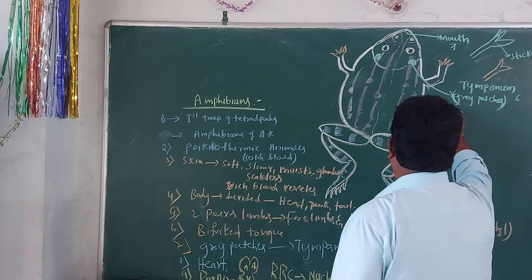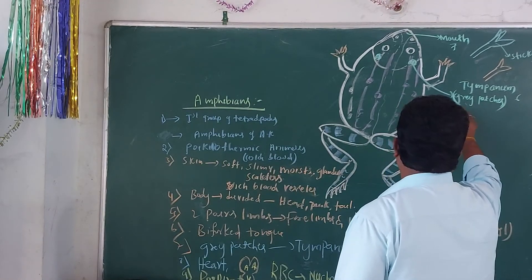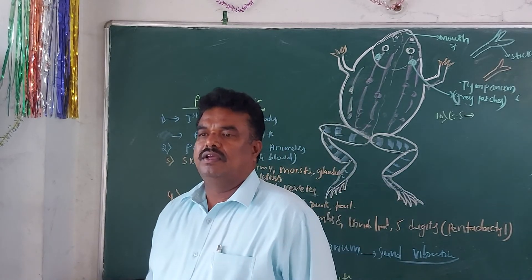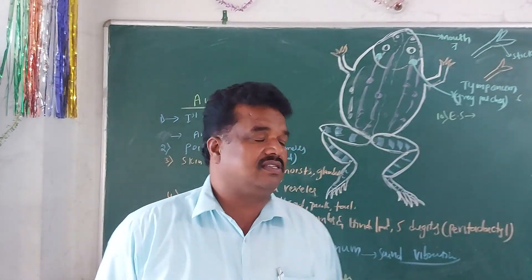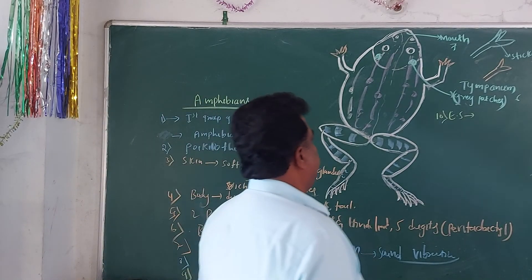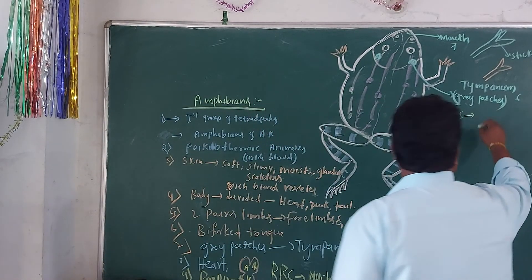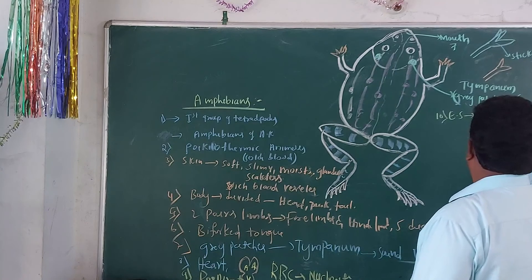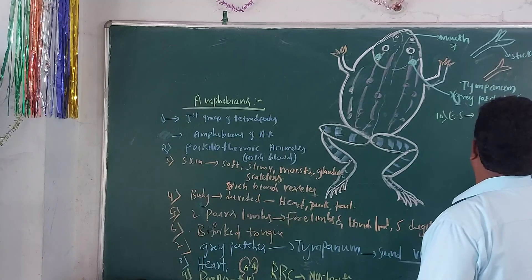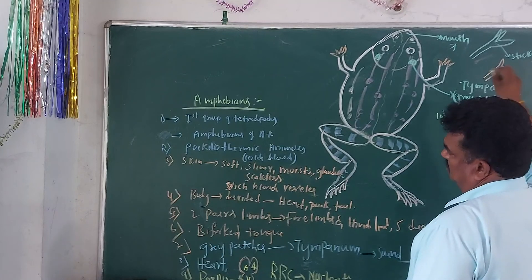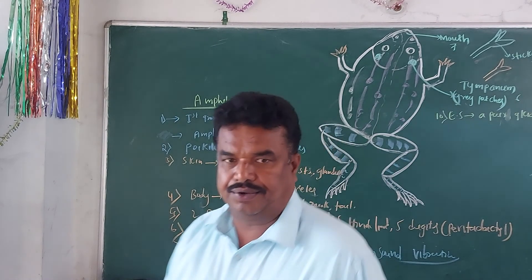Next is the excretory system. In amphibians, excretion mainly takes place by a pair of kidneys. The excretory system is well developed, taking place by a pair of kidneys. That will continue in our next class. Thank you.